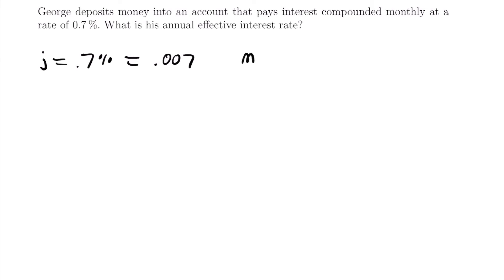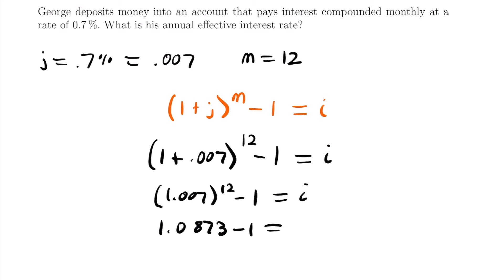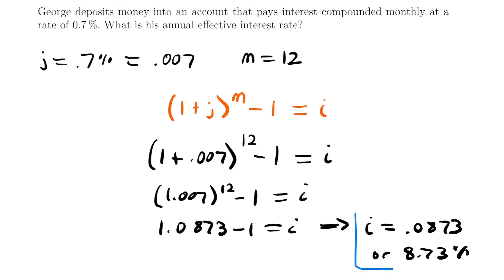Our M, the number of periods per year, is 12 because there are 12 months in a year. Using the formula (1 + J)^M - 1 = I, we plug in: (1 + 0.007)^12 - 1, which simplifies to 1.007^12 - 1, giving us 1.0873 - 1 = 0.0873, or 8.73%. That is George's annual effective interest rate.